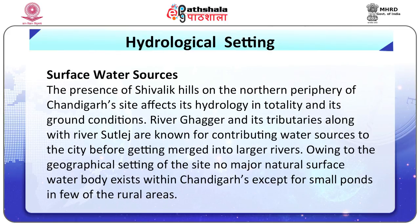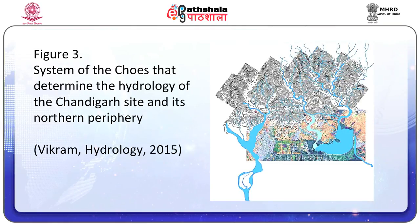The presence of Shivalik hills on the northern periphery of the Chandigarh site affects its hydrology and ground conditions in totality. River Ghaggar and its tributaries, along with River Sutlej, are known for contributing water sources to the city. Owing to the geographical setting of the site, no major natural surface water body exists within Chandigarh except for small ponds in a few rural areas. The city has its natural drainage dependent on two major stream sources locally known as Sukhna Ko and Patiala Ki Rao.